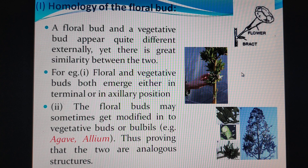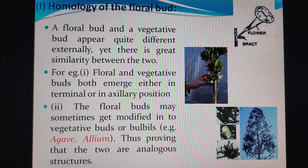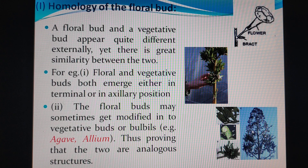Second, the floral buds can sometimes get modified into vegetative buds or bulbils. For example, in agave, the floral buds have been converted into bulbils. Here you can see the whole inflorescence of agave, where the flowers have converted into bulbils. This is also a homology of the floral bud.